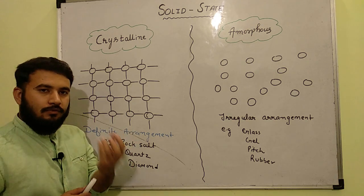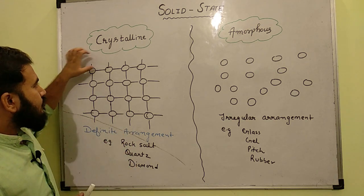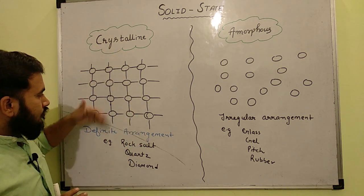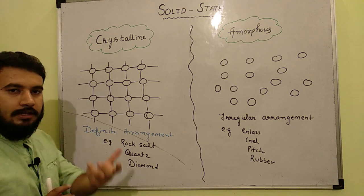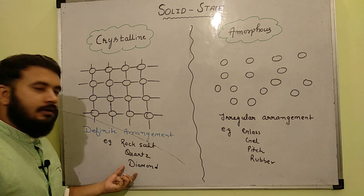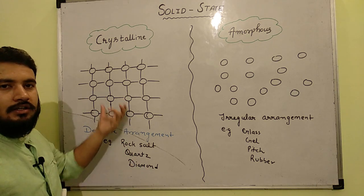Now basically crystalline solids are those solids that have constituent particles in a definite pattern. So it will be arranged in a regular pattern, for example like rock salt NaCl, quartz, and your diamond. So these are the crystalline solids.